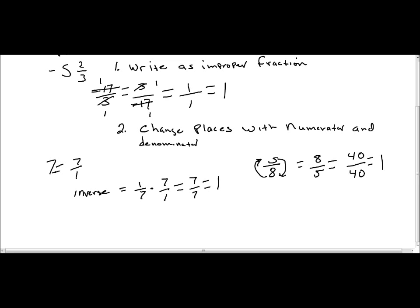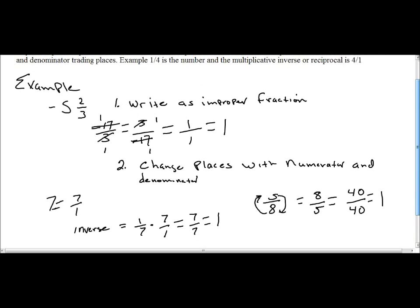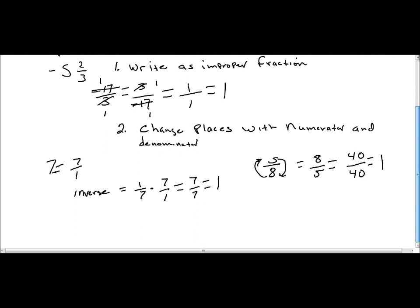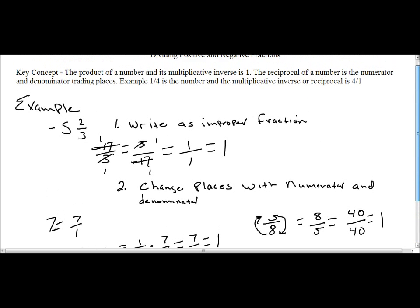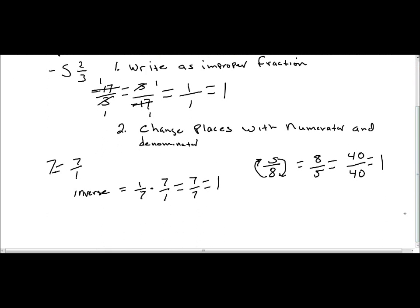If it's just a normal fraction, we just simply change places. If it's improper, we simply write—if it's a mixed number actually, then we just simply write as an improper prior to changing places. Let's do one more of these, and then I'll let you guys go. We have a negative 2 and 1 third.